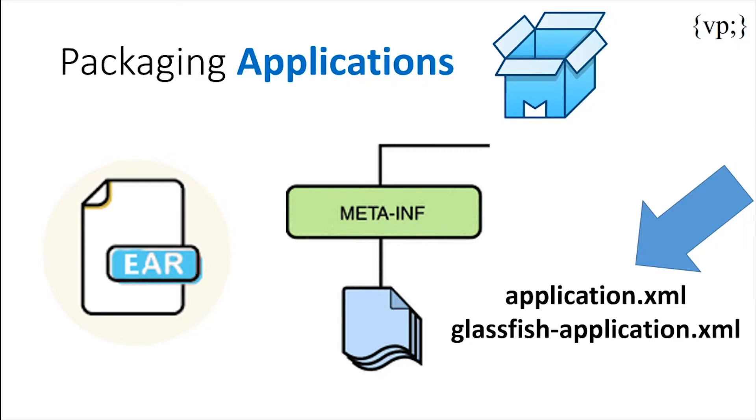The Java EE deployment descriptor, or application.xml, is for any deployment settings of the application, while the runtime deployment descriptor, glassfish-application.xml, is for deployment settings for the GlassFish server.